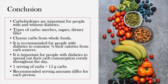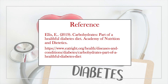In summary, for both people with and without diabetes, carbohydrates play an important role in a healthful diet. Types of carbs include starches, sugars, and dietary fiber. Whole foods such as fruits, vegetables, beans, whole grains, nuts, and seeds provide more dietary fiber, protein, and nutrients to support health and prevent blood sugar spikes. It is recommended for people with diabetes to consume half their calories from carbs, which is not far off from the general recommendation. It is important to spread carb consumption evenly throughout the day, and one serving of carbohydrates equals 15 grams. The recommended number of servings per day will differ for each person based on their calorie needs.